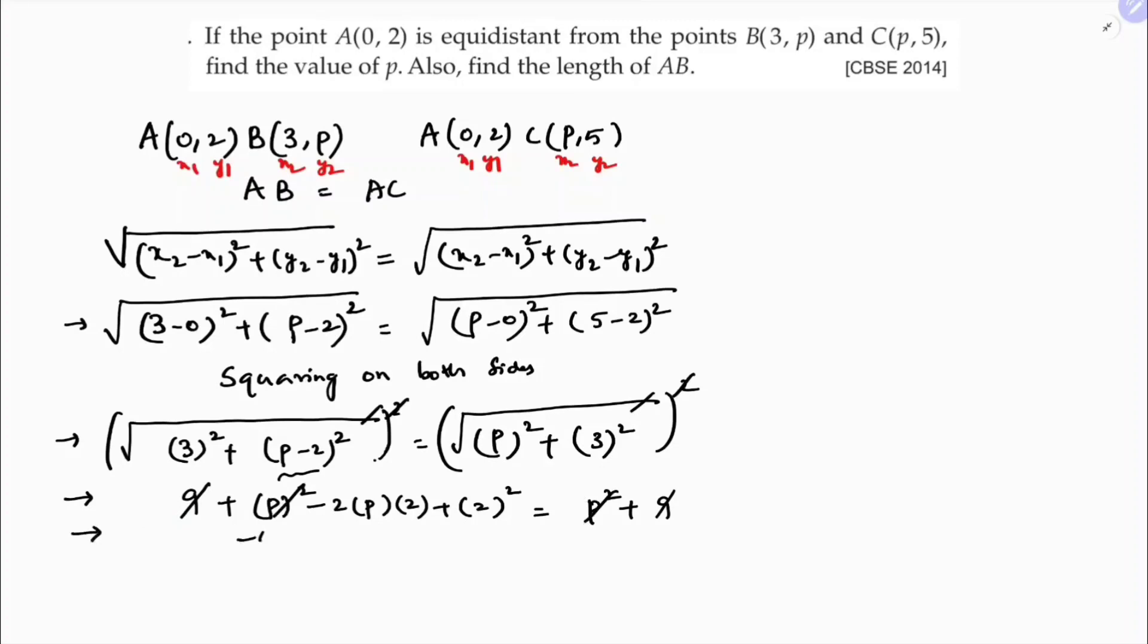So you are left with minus 4P plus 4 equals 0. So if you will calculate minus 4P equals minus 4, P equals minus 4 by minus 4, P equals 1. So the value of P is 1.